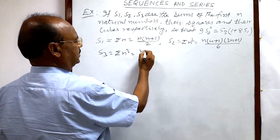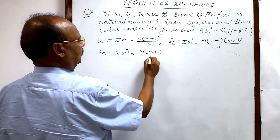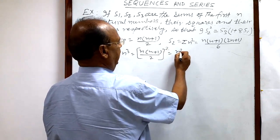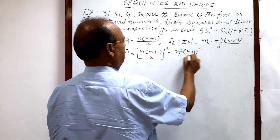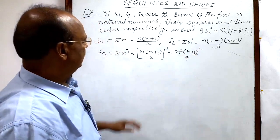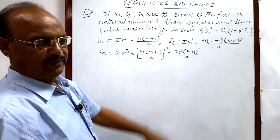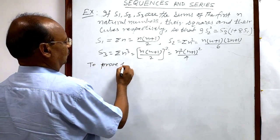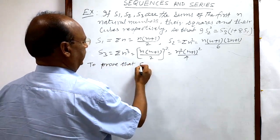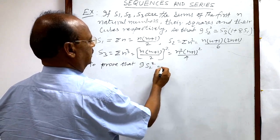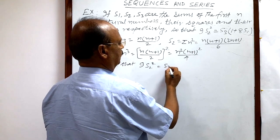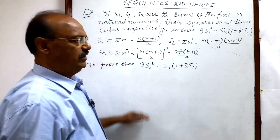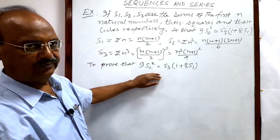And S3, the sum of cubes of first n natural numbers, written as sigma n cubed, is [n(n+1)/2]² which can also be written as n²(n+1)²/4. We have established these results in previous videos. Here we have to prove that 9 S2 squared is equal to S3 into (1 + 8 S1).